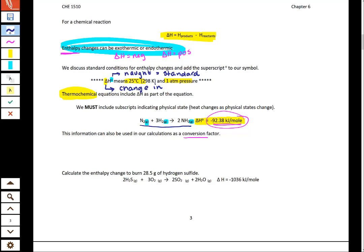We could say something like for every one mole of nitrogen that's used, there is 92.38 kilojoules of heat released. Or maybe we could say for every two moles of ammonia we make, there's 92.38 kilojoules of heat released.